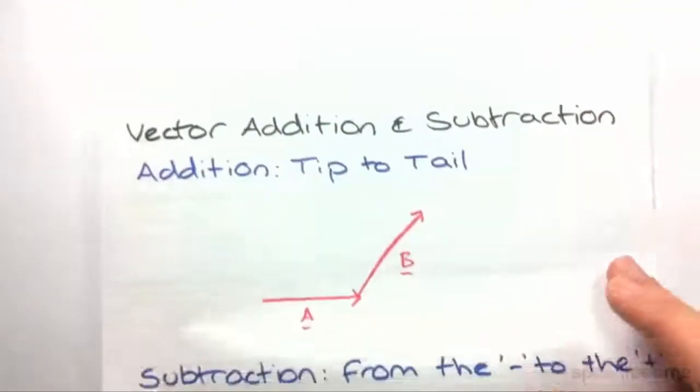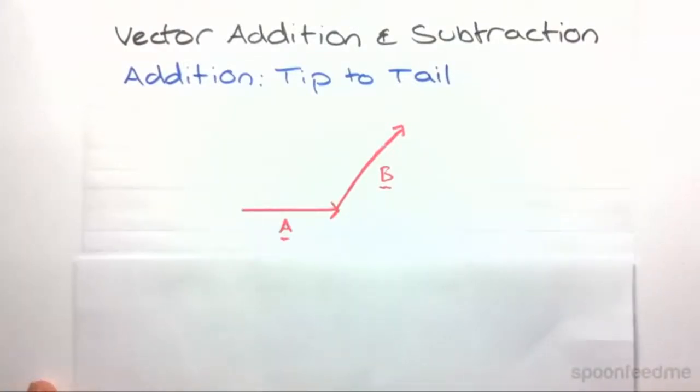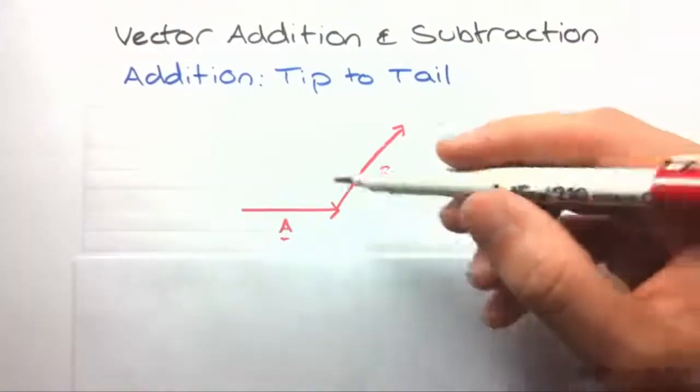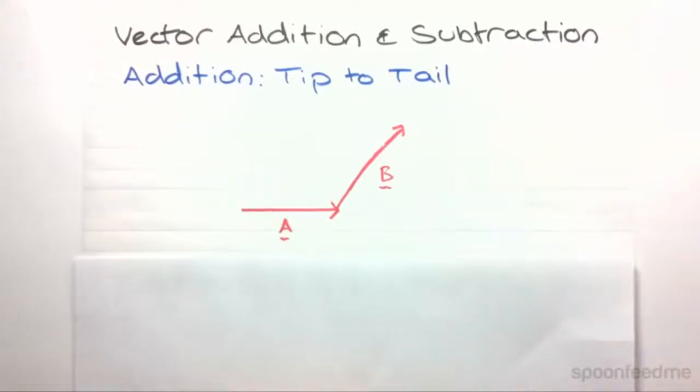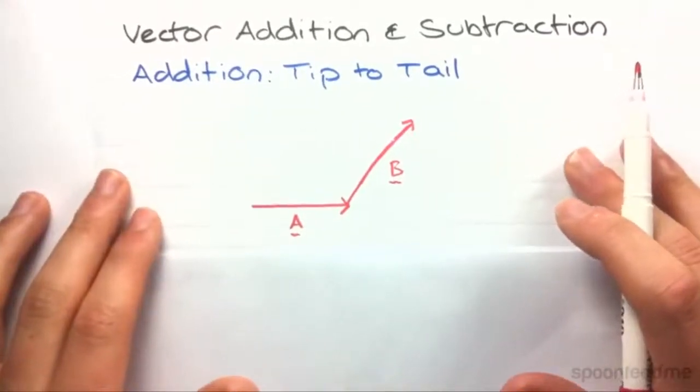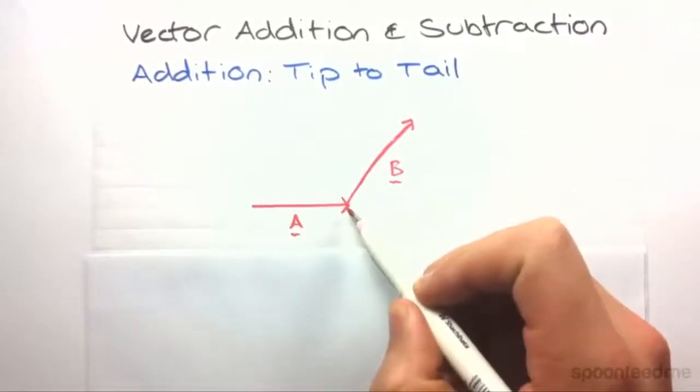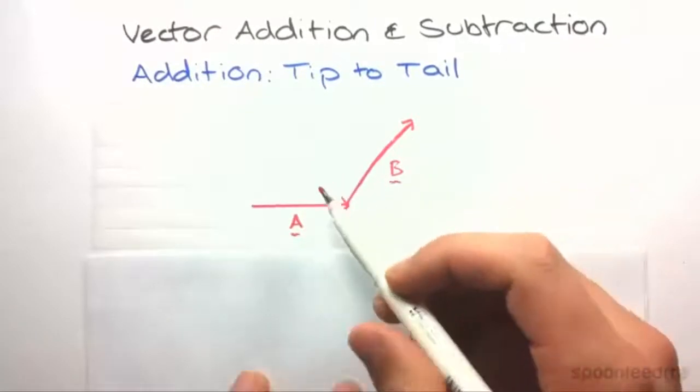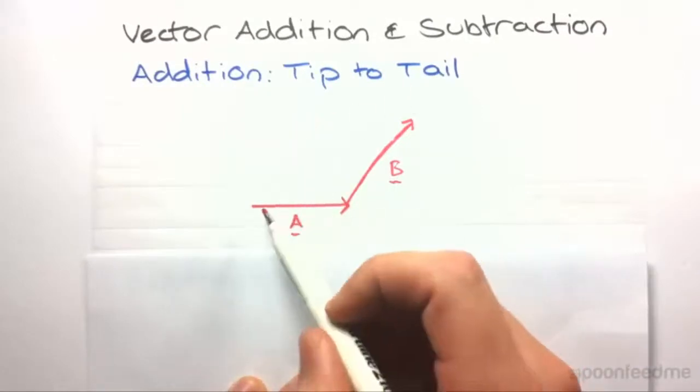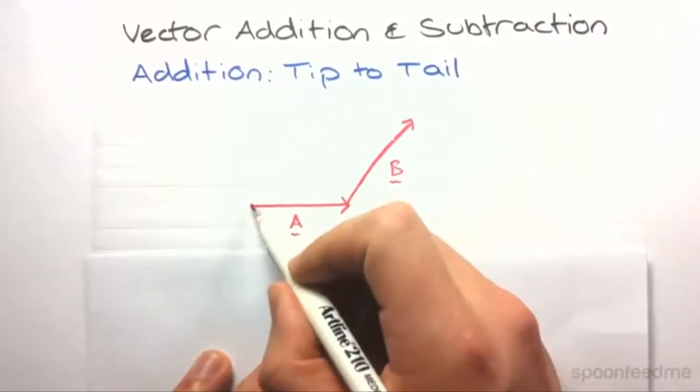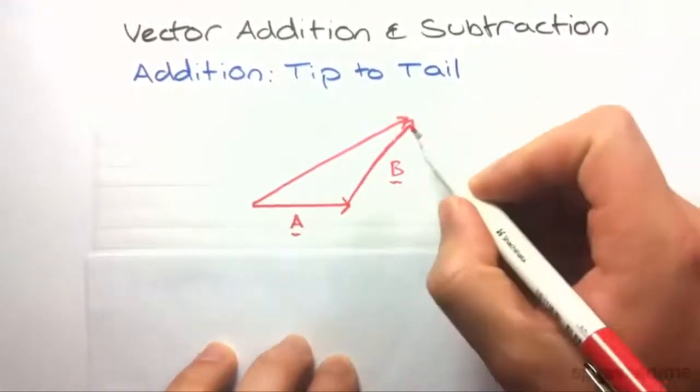So moving on to manipulating these, let's say for example you want to add two vectors. For instance, if a hiker walks 20 meters in this direction, then 30 meters in this direction, what is the resulting displacement? So we add the two displacement vectors tip to tail. What that means is the tip of the first meets the tail of the second, and we draw the resulting displacement vector from the tail of the first to the tip of the second. So it will look like this. So that's the resulting displacement vector.